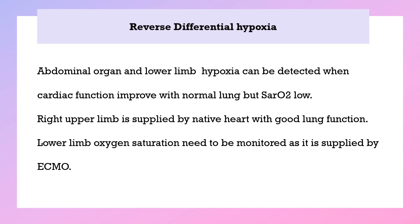Reverse differential hypoxemia involves abdominal organ and lower limb hypoxemia, detected especially when cardiac function improves. The lung is normal, but oxygen saturation in the return cannula is very low. The right upper limb is supplied by the native heart with good lung function, while the lower limb oxygen saturation — supplied by ECMO — should be monitored. This occurs when ECMO flow decreases and the oxygen saturation from the ECMO side falls.